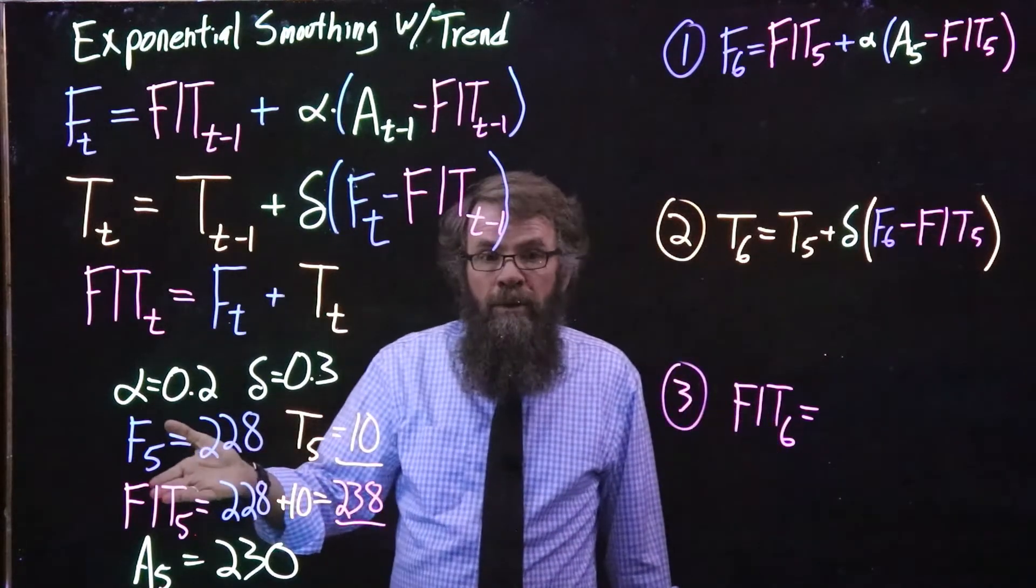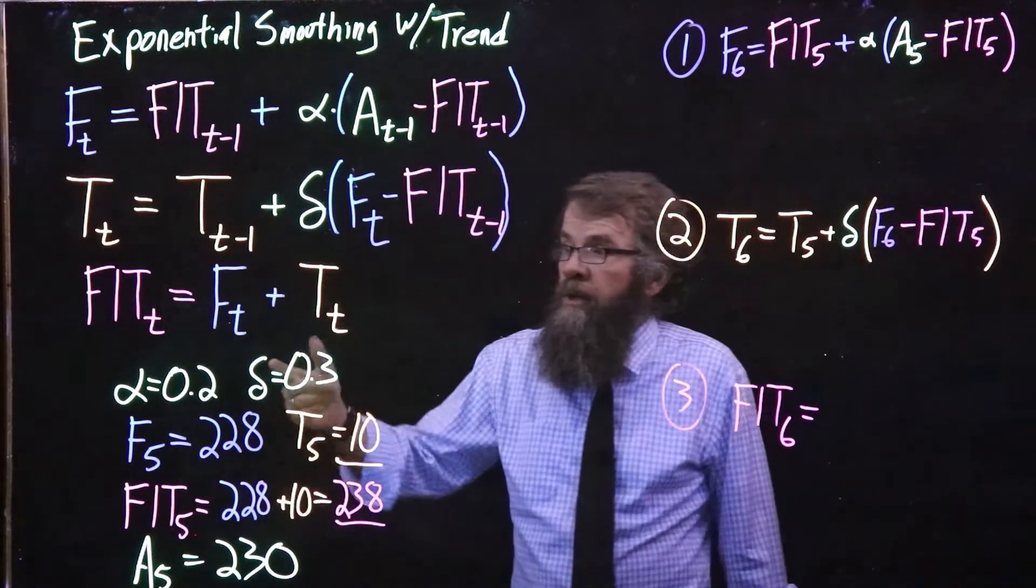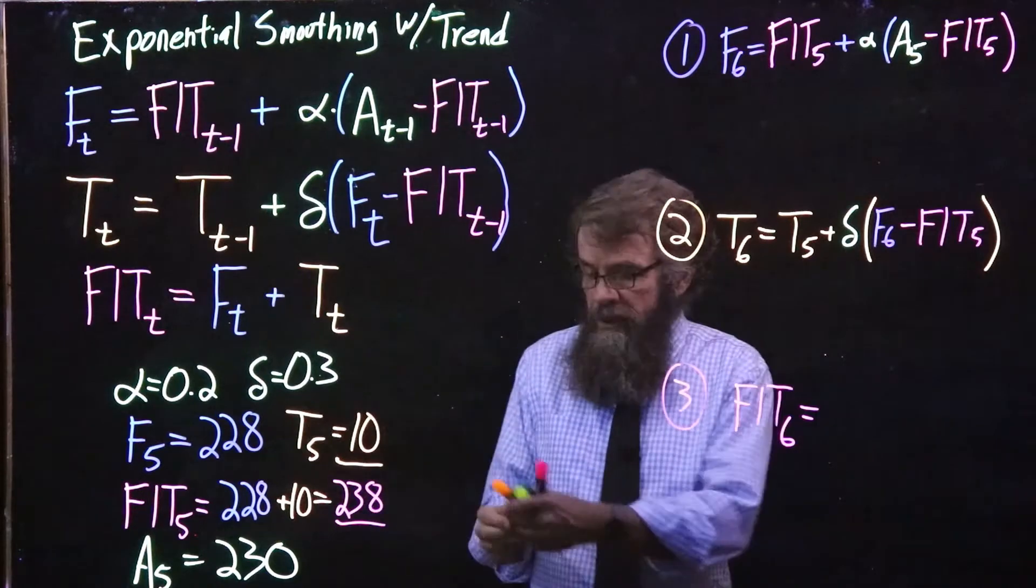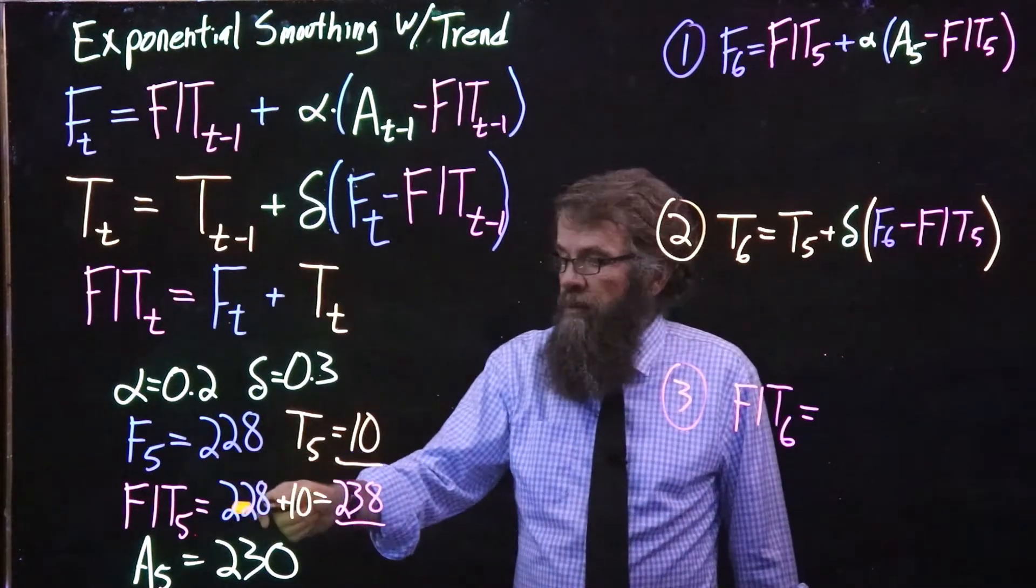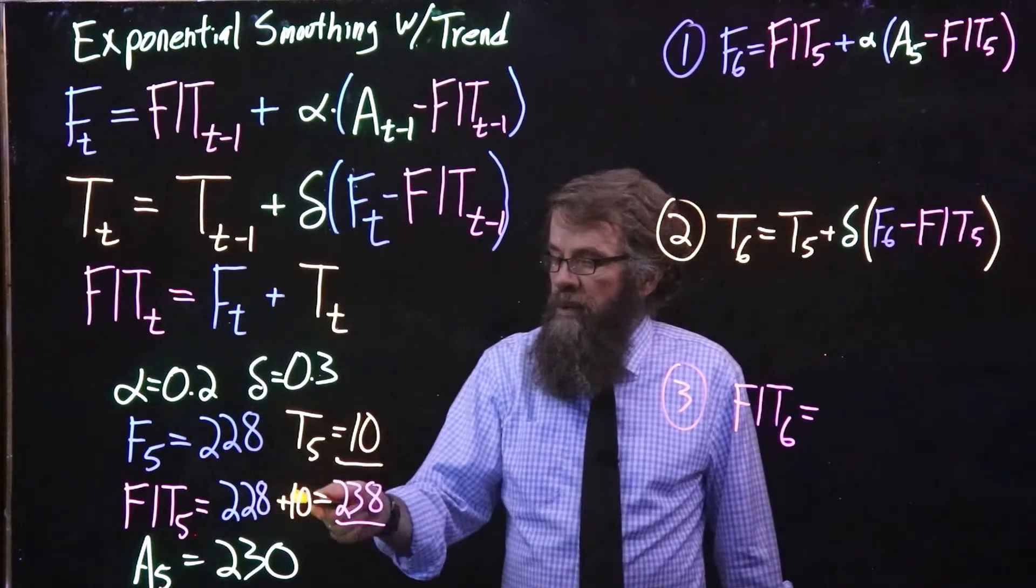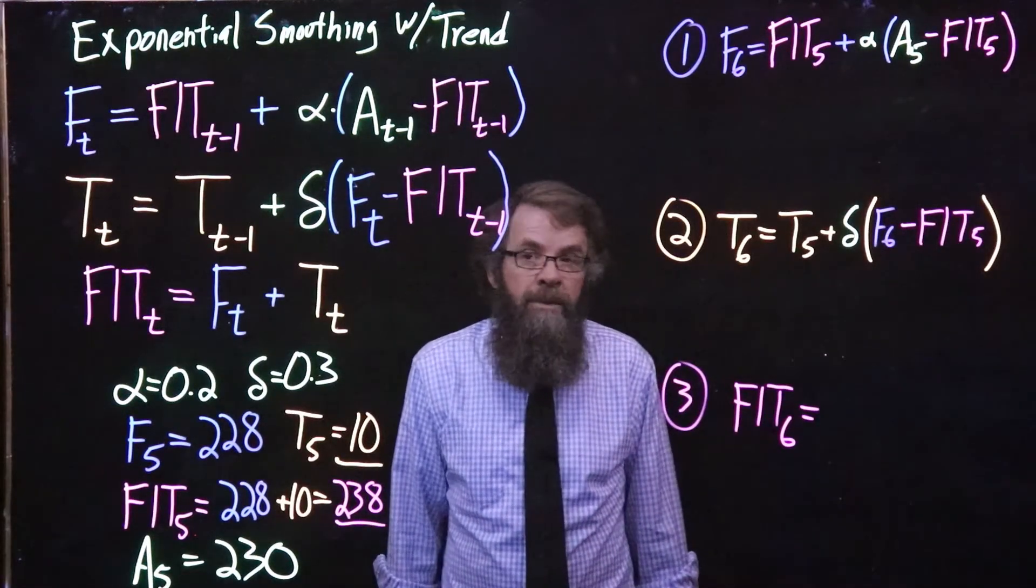The forecast including the trend for the most recent period we'll get that as always by adding the two most recent values, the level plus the trend. So since we had 228 as our most recent value for the level and then we had 10 as our most recent value for the trend, we add those two things together and we had a forecast including the trend of 238 for the most recent period.